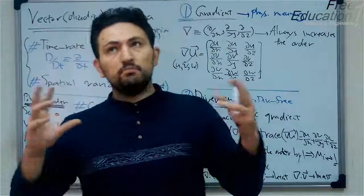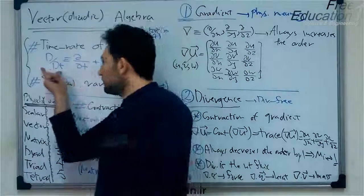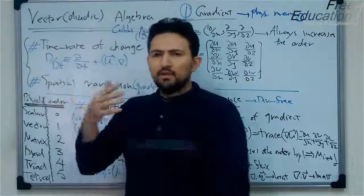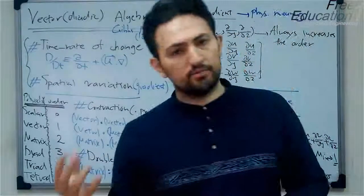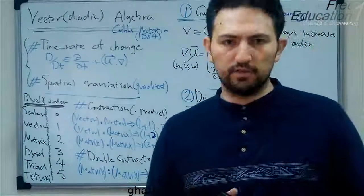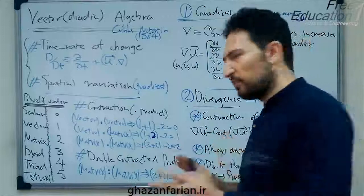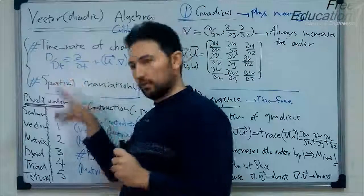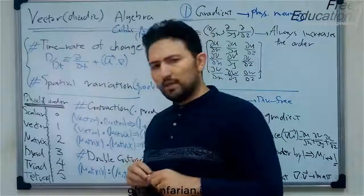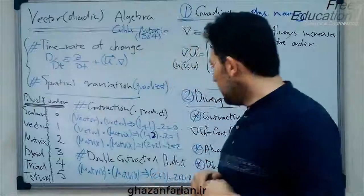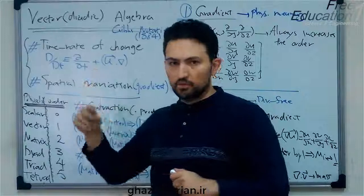So if we want to describe the motion of something, we have to understand the concept of time rate of change. The well-known operator for computing the time rate of change is the material derivative, or the substantial derivative, or the total derivative. Material derivative is a scalar operator and has two parts: the local part and the advection part, or the convection part.